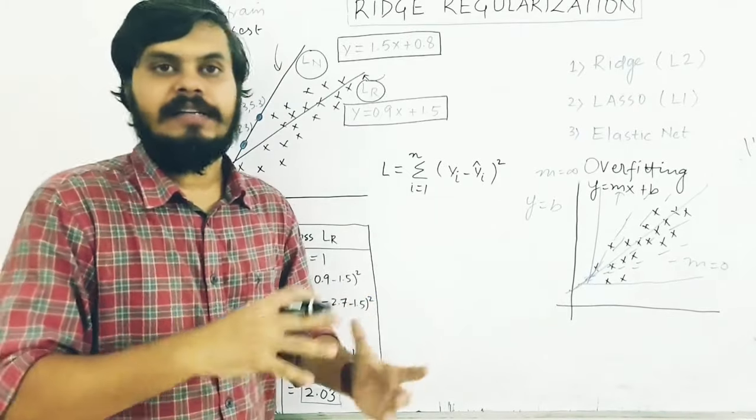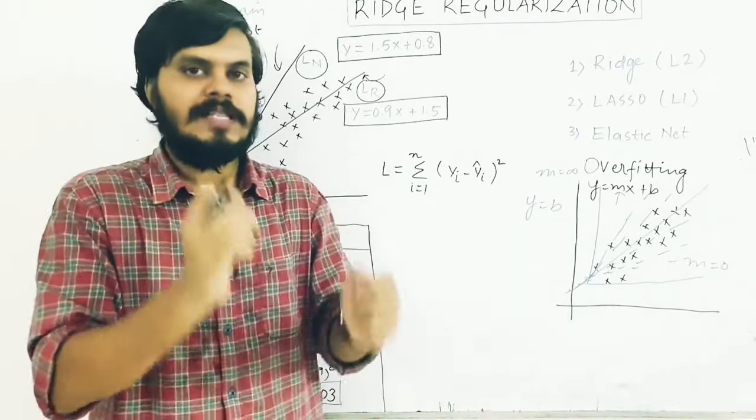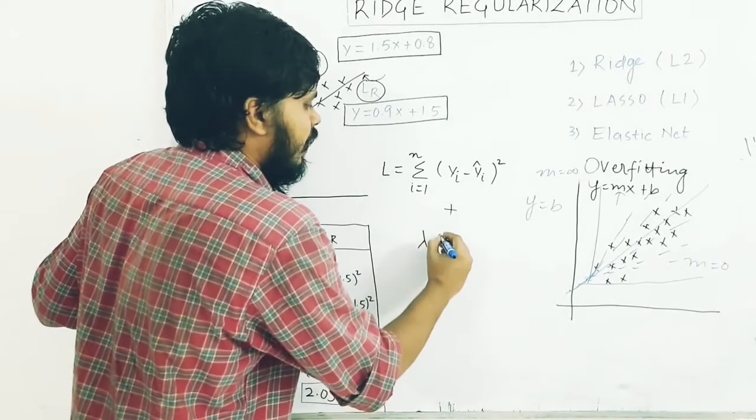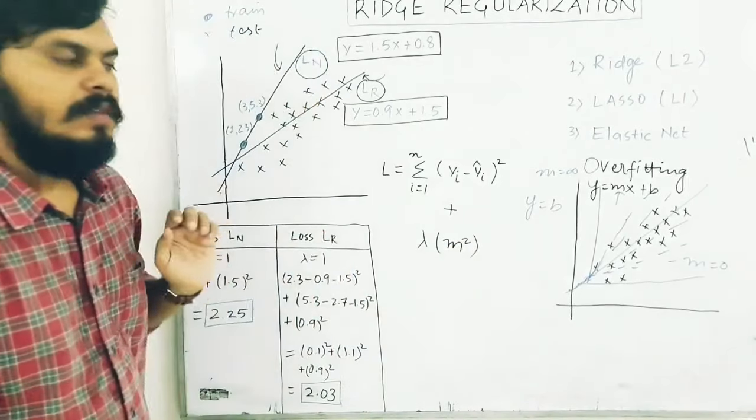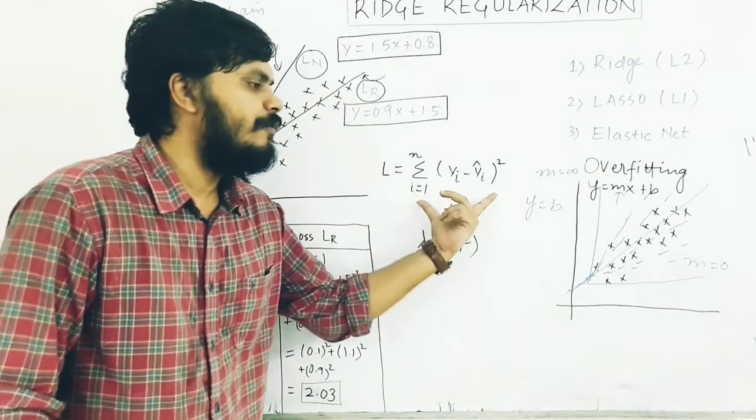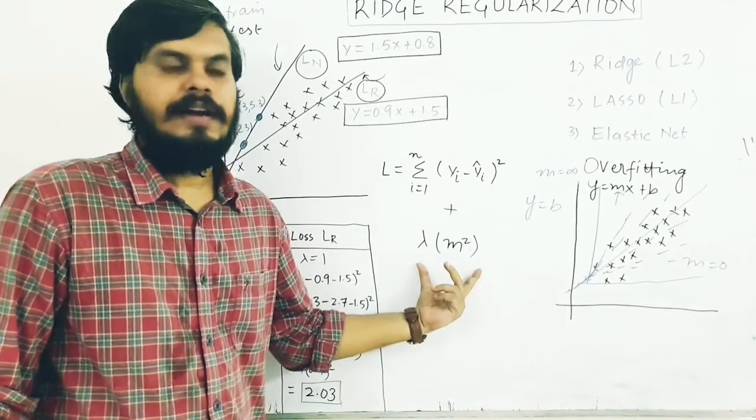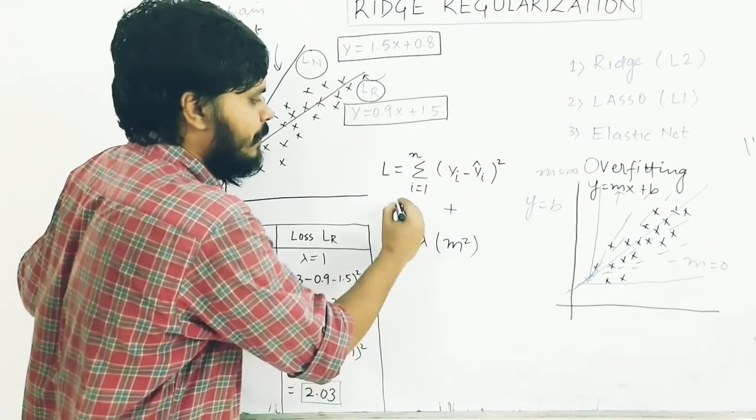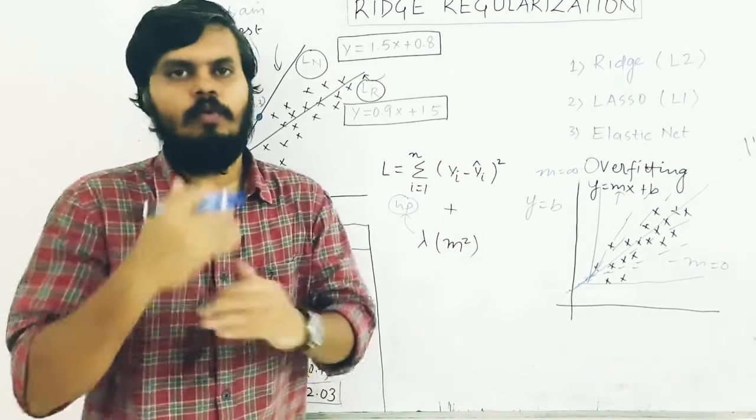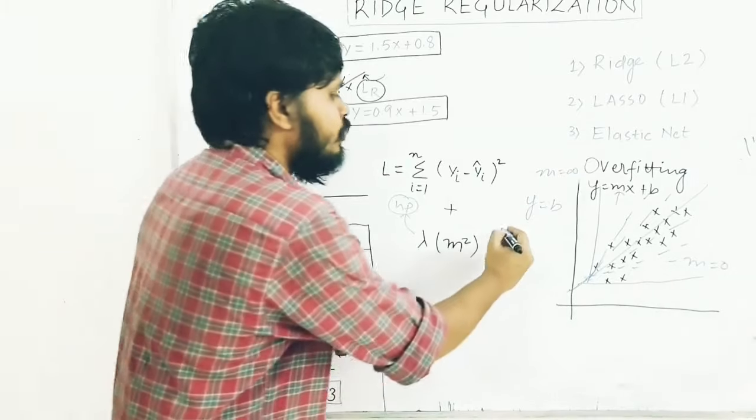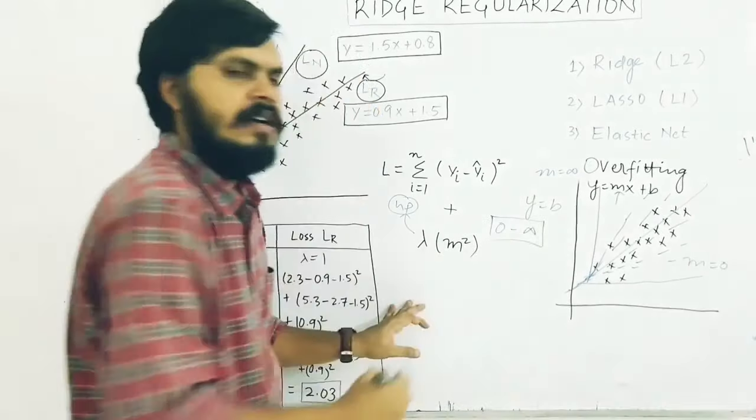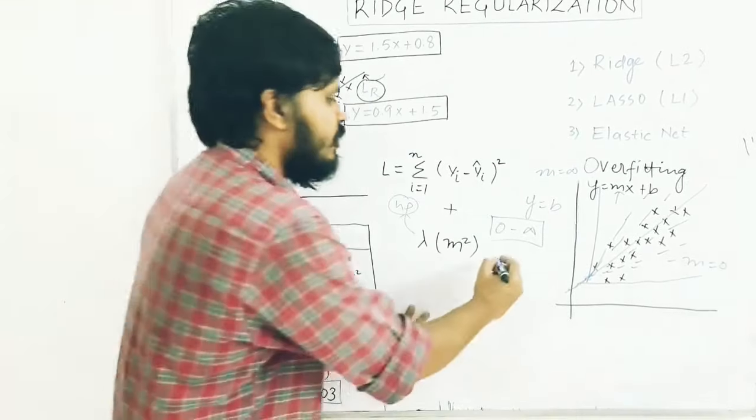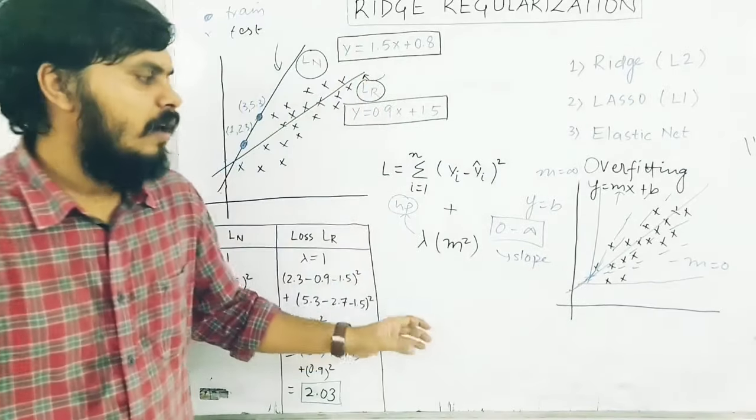What do you do in regularization? You add an extra term. That extra thing is lambda times m squared. So now I will say that my loss function is not only this residual error, but this term will be added. Lambda is actually a hyperparameter, generally with values from 0 to infinity. And m is basically your slope.